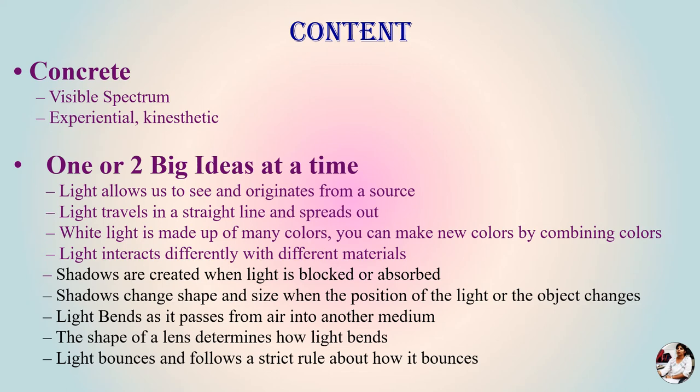The content of today's lecture covers: how light allows us to see, how light originates from a source, how light travels in a straight line, how light is made up of different colors, why we see white light as made up of different colors, and how shadows are created. After watching this video, we will learn some theory points on these small topics.